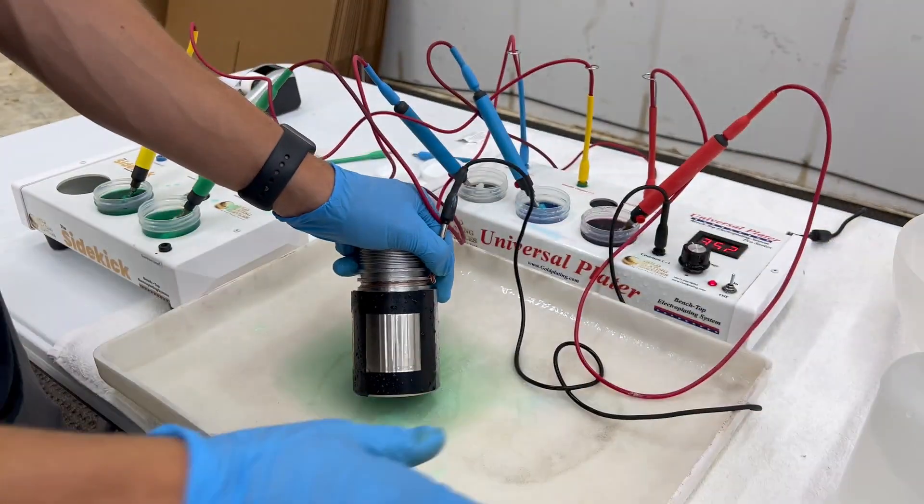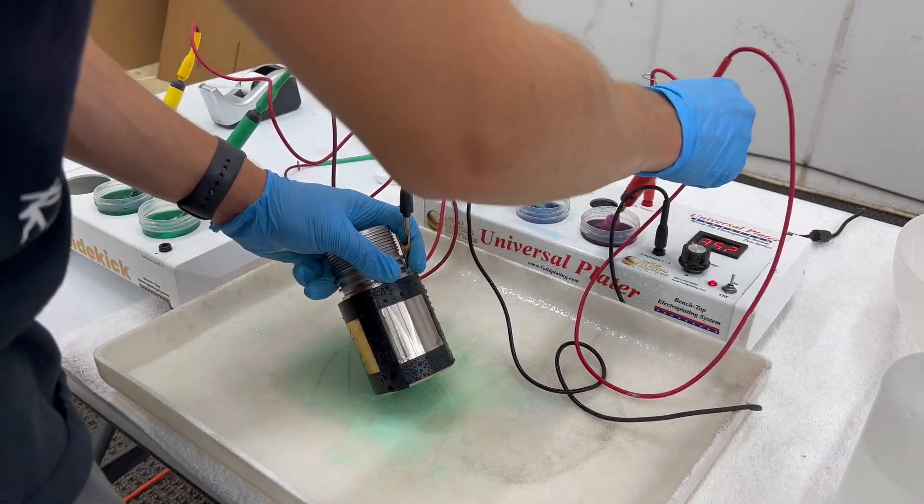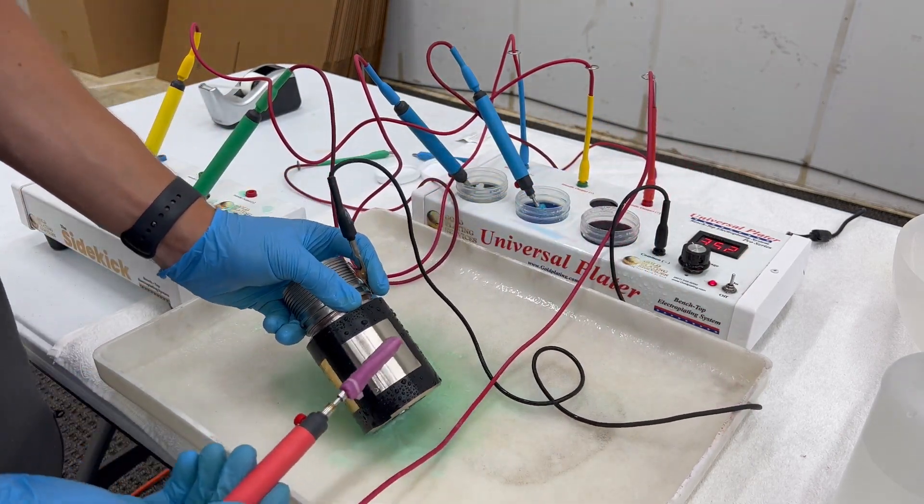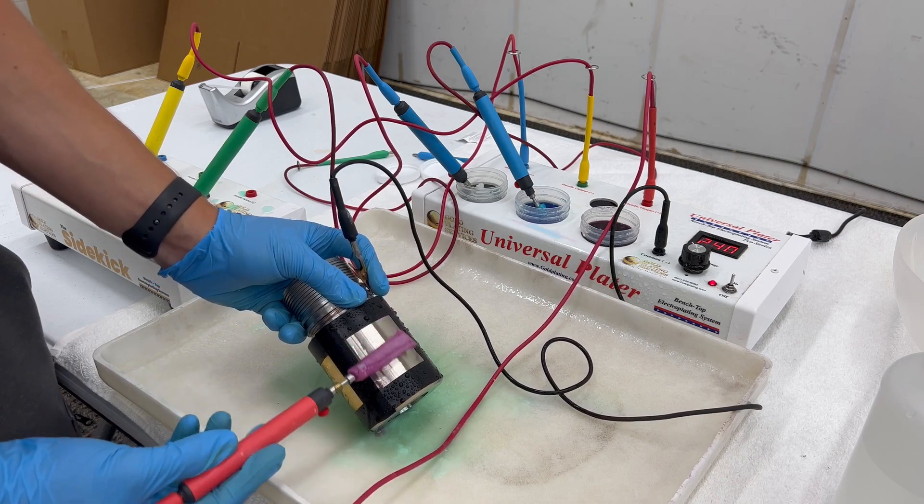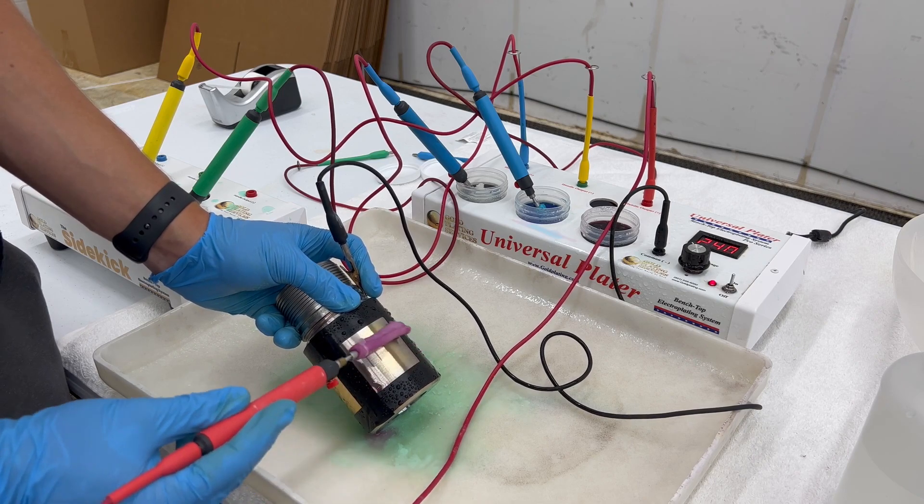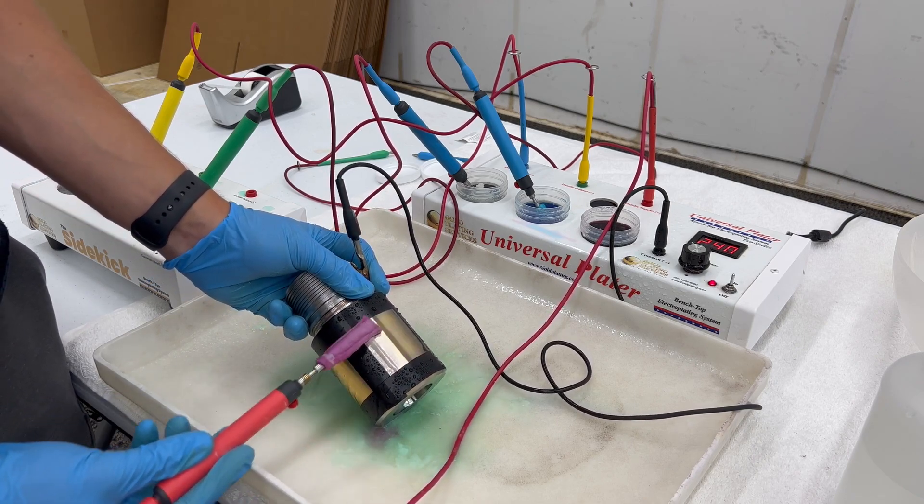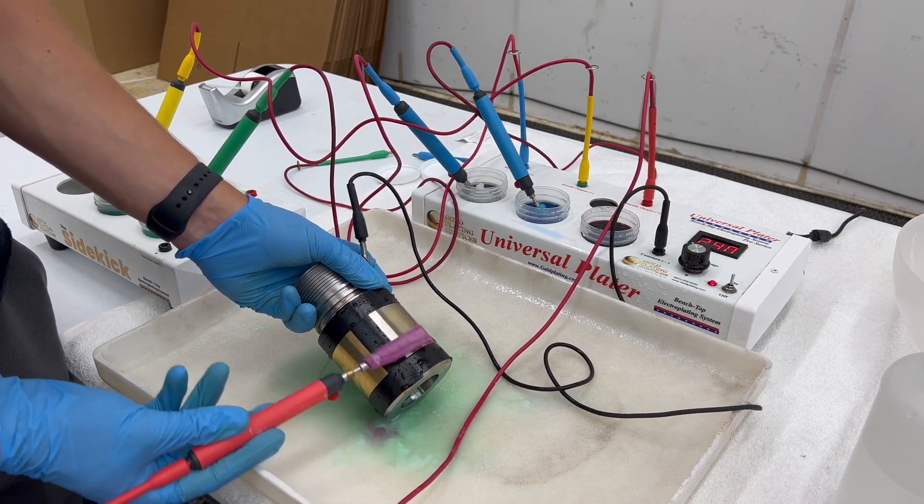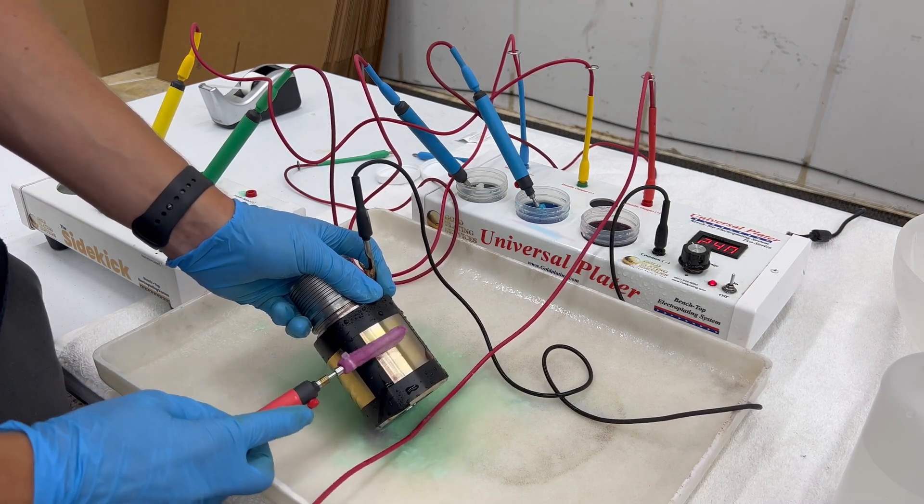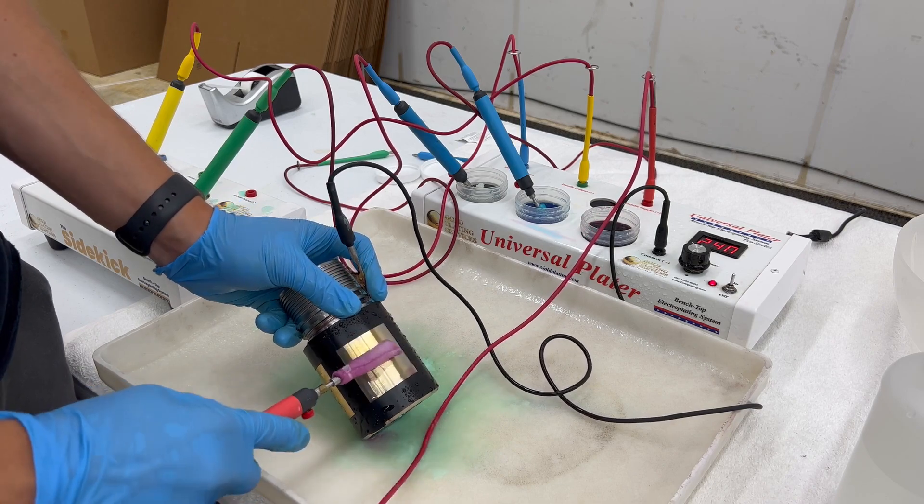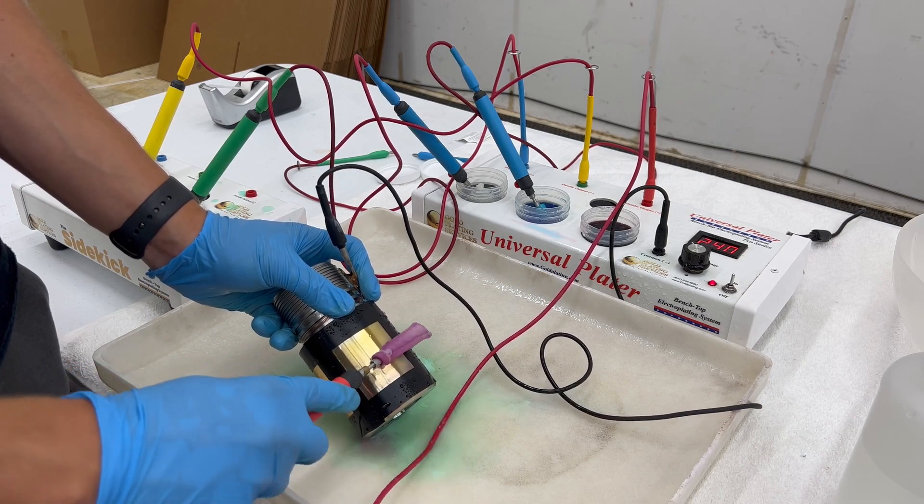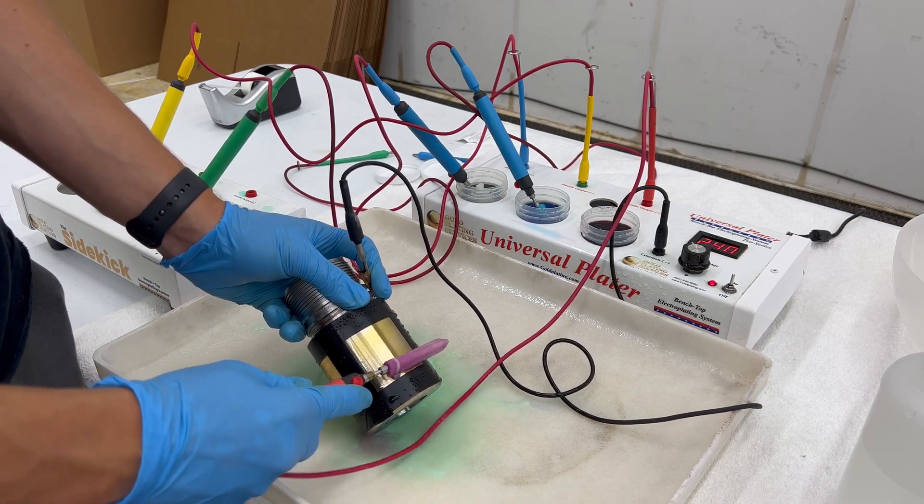Now we've got it plated in our nickel. I'll spray it off and rinse it and now we can move on to our gold. We'll get our gold and watch this—watch it start appearing. Make sure to get down here, do a little rolling. There we go, it's showing up now.